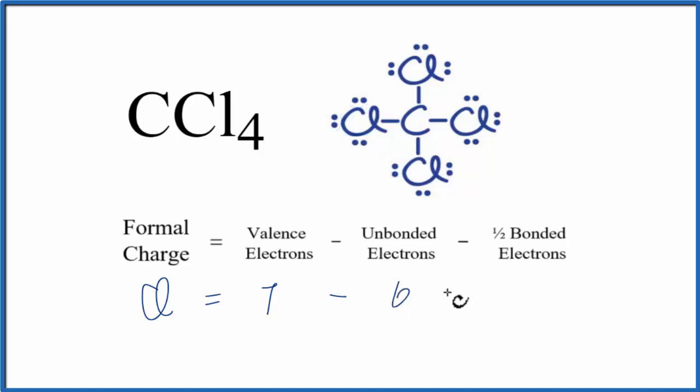And then we subtract 1 half of the bonded valence electrons. These are the valence electrons that are involved in a chemical bond. They're between the atoms. The line here shows that it's a chemical bond, and there are 2 valence electrons in this bond.